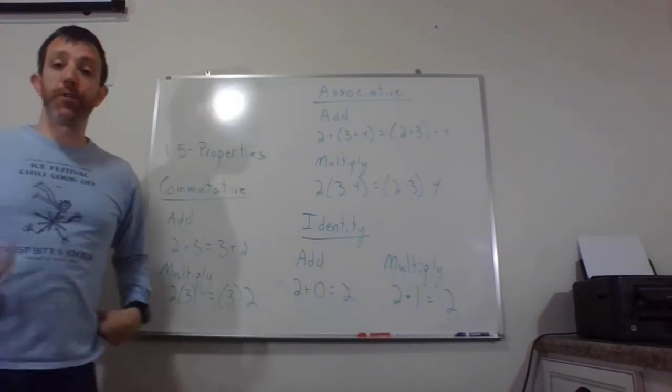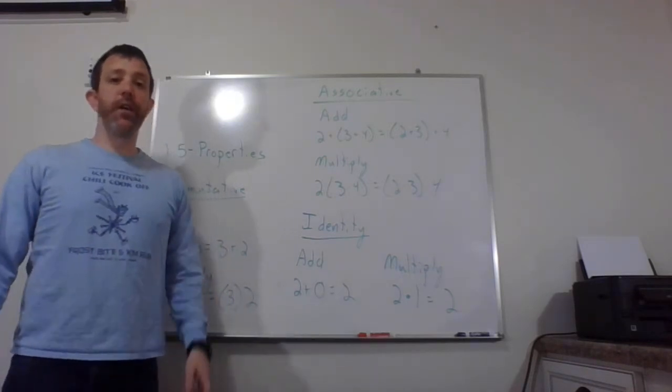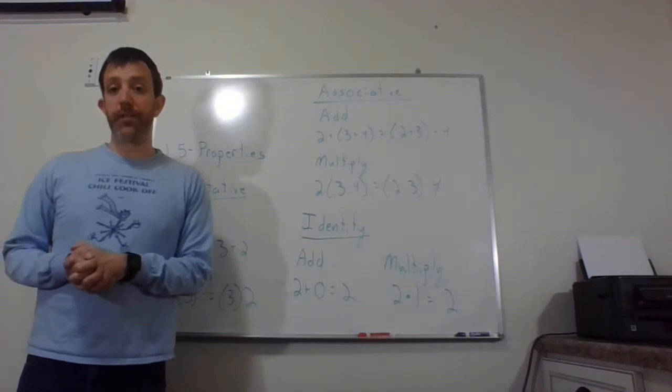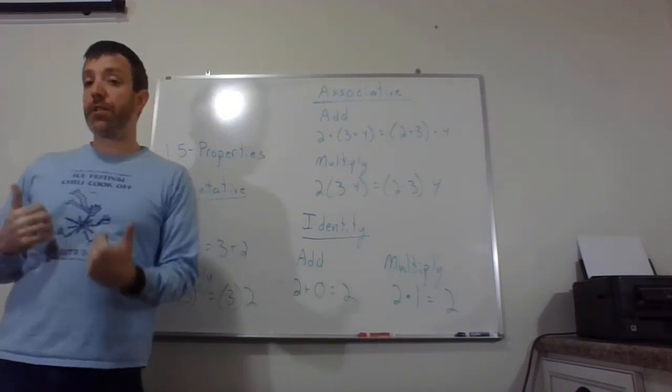The associative property, again, two parts, addition and multiplication. The associative property is going to change what is grouped inside of the parentheses. Again, importantly, this only works for addition and multiplication.